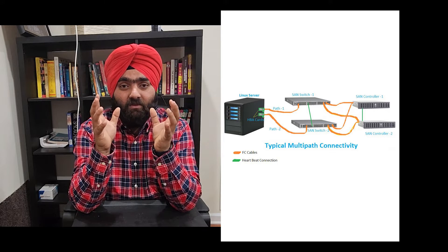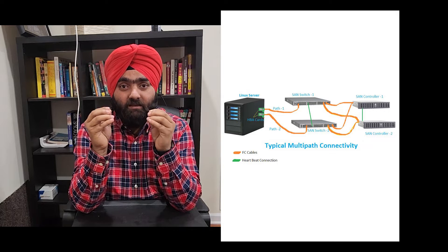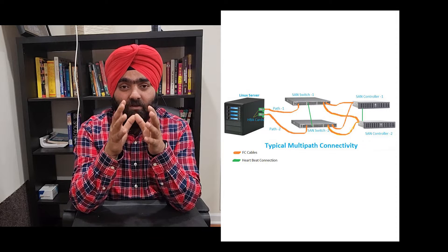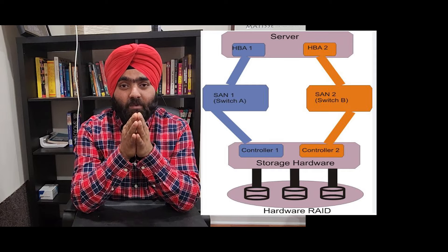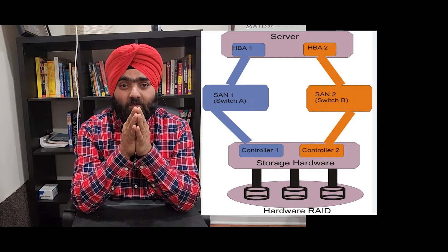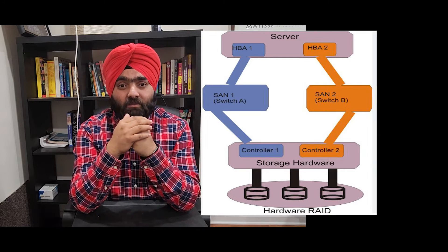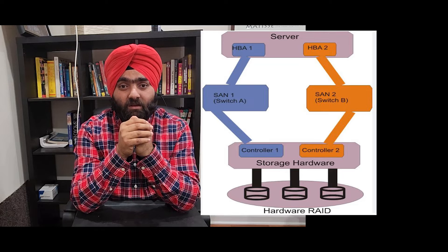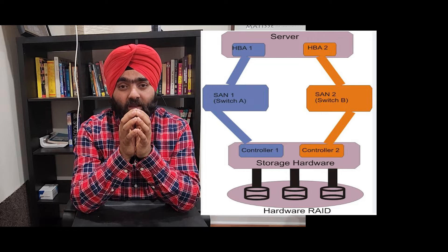This is the concept of multi-pathing, and there is a lot more science and technology into it, but this is basically what it is. Multi-pathing can be between storage and compute, between compute and your network services, or between your over-stack and under-stack. Basically it is a redundancy between the components of compute.